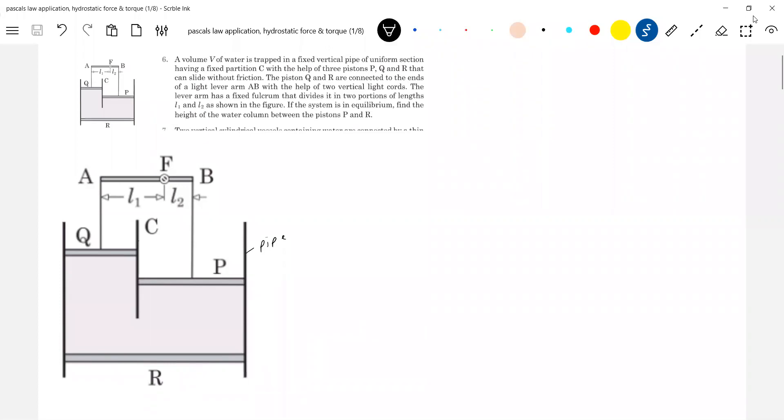Well, this is like a hinge. F will become like a hinge it is. A rod is kept here. And these are the strings. If the system is in equilibrium, find the height of water column between the pistons P and R.